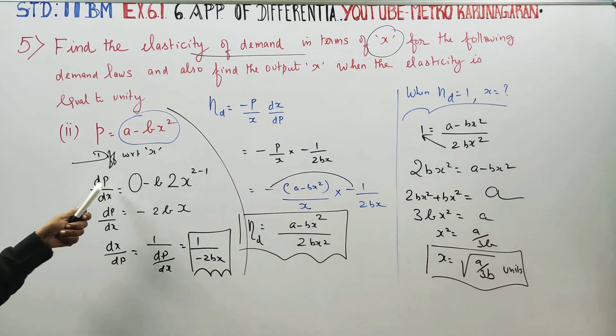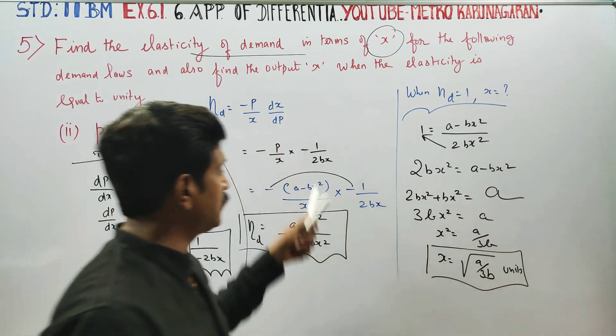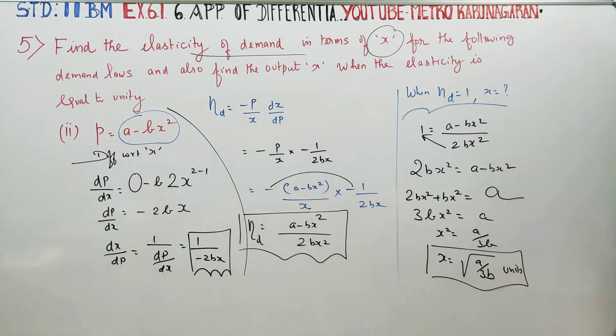First find dp by dx, then get dx by dp, and substitute. When elasticity of demand is equal to 1, solve for x. The answer is x is equal to root of A by 3B. Thank you.